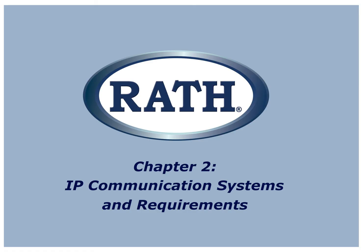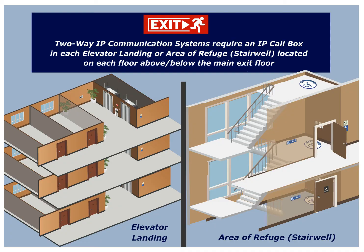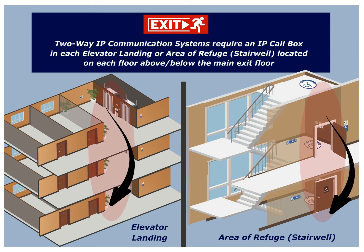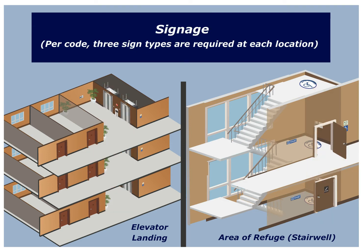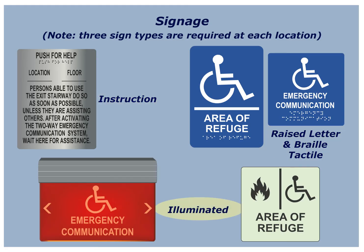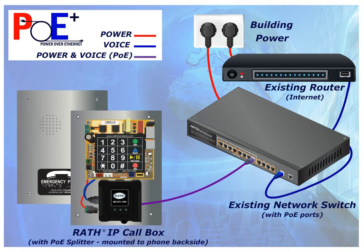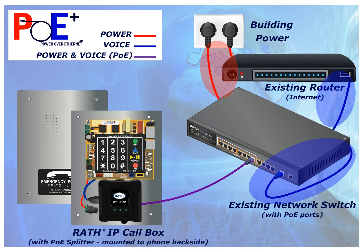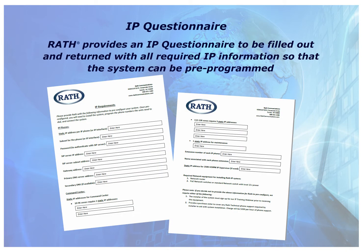Chapter 2: IP Communication Systems and Requirements. Two-way IP communication systems require an IP call box in each elevator landing or area of refuge located on each floor above and below the main exit floor. Per code, three signs are also required at each location — instructions, tactile, and illuminated signs. This is the typical setup for an IP phone or call box system, with a POE network connection from the IP call box to a local network switch tied into the building's network. RATH provides an IP questionnaire to be filled out and returned with all required IP information so that the system can be pre-programmed.